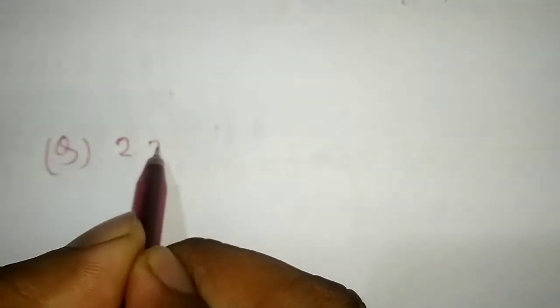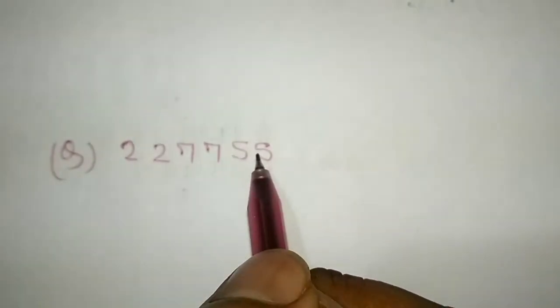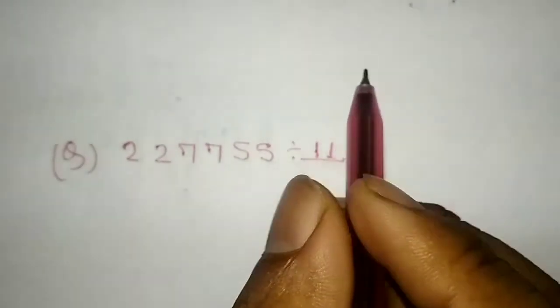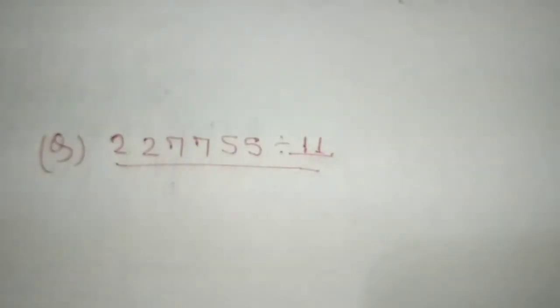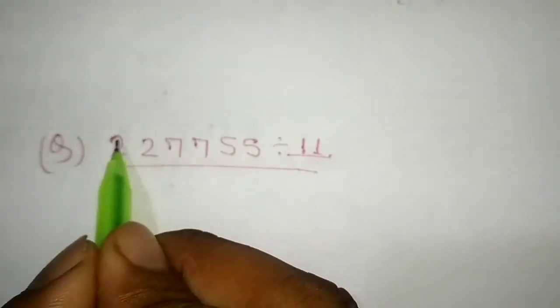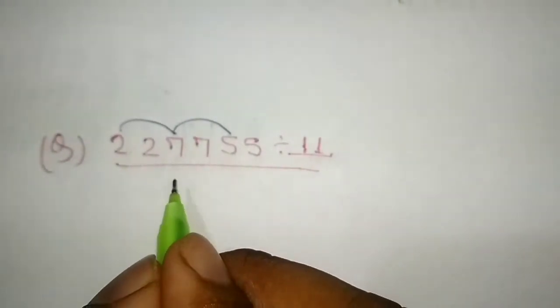227753. Could it be divided by 11? We could take the alternative sum.